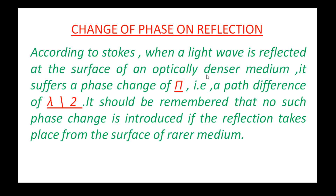We know that partly the light is reflected and partly it is transmitted. When the wave is reflected from an optically denser medium, the phase value changes by pi, or equivalently the path difference changes by lambda by 2. It should be remembered that no such phase change is introduced if the reflection takes place from the surface of a rarer medium.